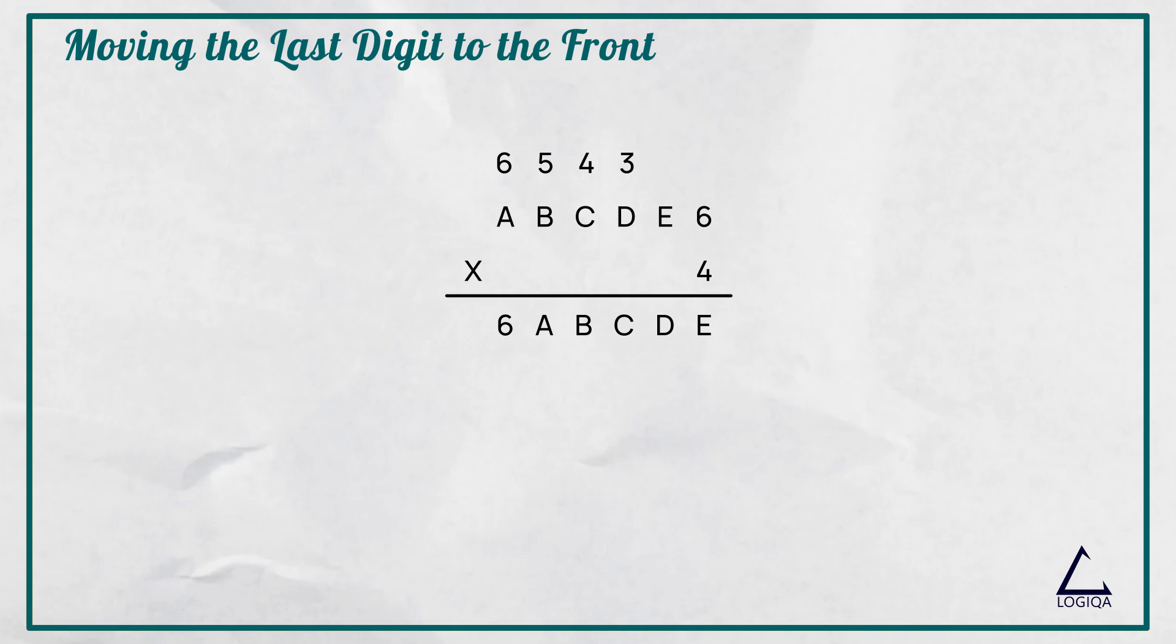We start by labeling the columns from right to left. Then, we consider each column to get the value of a particular letter. We can then substitute this value in the next column to get the value of another letter. We continue in this manner to get the values for each letter.